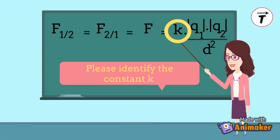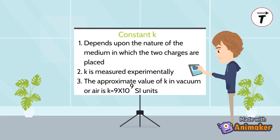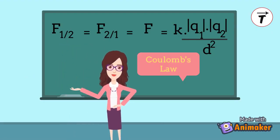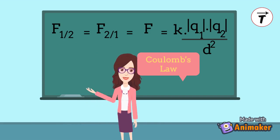Can you identify the constant k? k is a constant that depends upon the nature of the medium in which the two charges are placed. k is measured experimentally and its approximate value in vacuum or in air is k equals 9 times 10 power 9. This formula is known as Coulomb's law after the name of the scientist who established it.